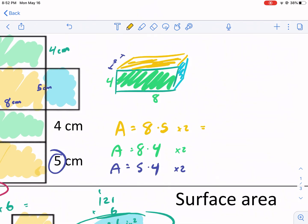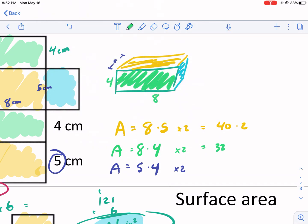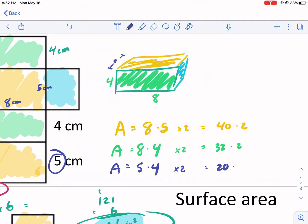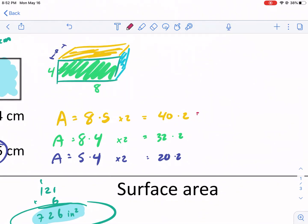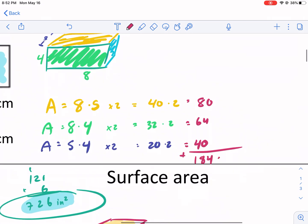Keep in mind how many of each one of these rectangles - I need to multiply this by two, this one by two, and the yellow one by two also. I'm going to get 40, times two is 80. Eight times four is 32 times two is 64. Five times four is 20 times two is 40. I need to add all these up, and that will give me the total surface area. 64 plus 40 is 104, so 184 centimeters squared.